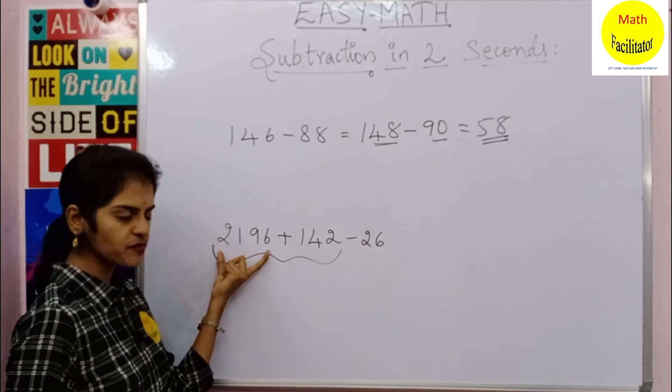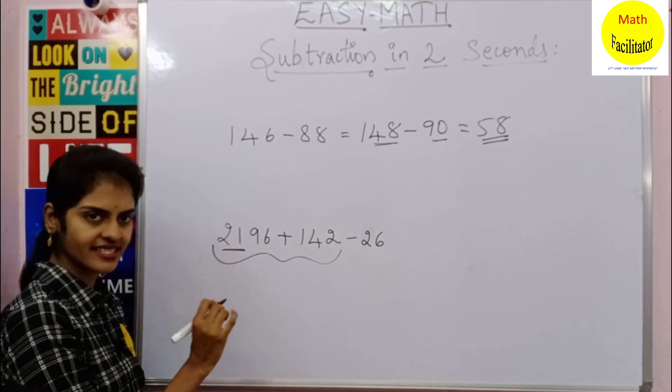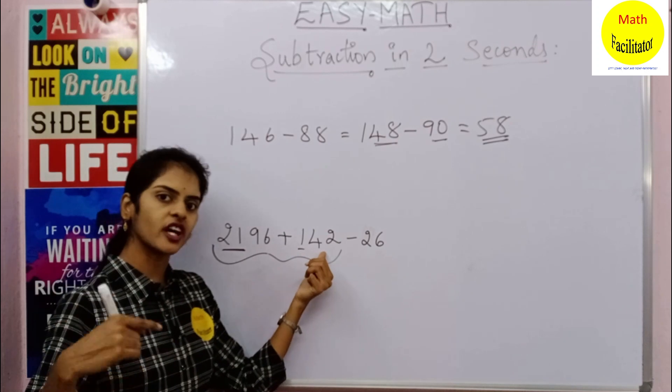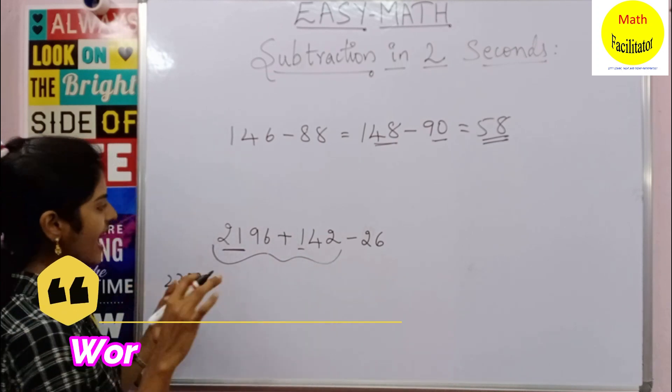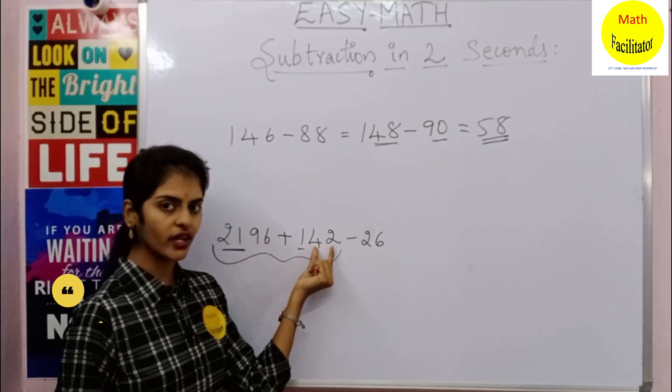Firstly, let us see that you have 2000 here. Let us add thousands and hundreds digits. So 2100 plus 100 is 2200. And you can add 90 and 40. So 90 and 40 gives you 130. So 2200 plus 130 is nothing but 2330.